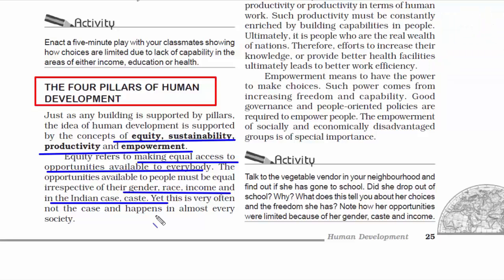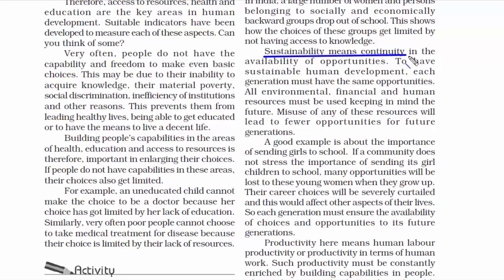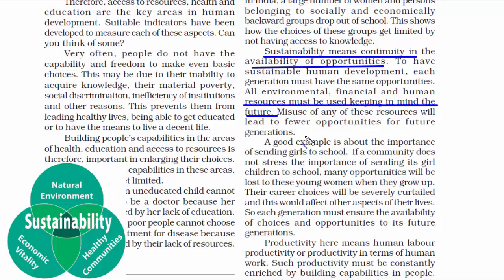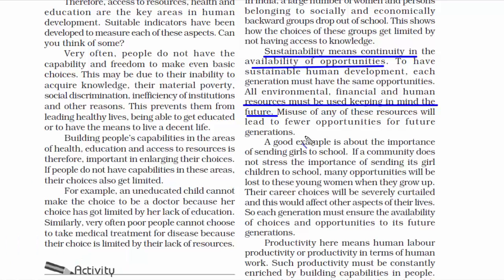The second pillar is sustainability, meaning continuity. For continuous human development, each generation must have the same opportunities. While sustainability is often used with regards to nature and environment, in human development it means ensuring opportunities are preserved. In many parts of India, communities do not stress the importance of sending girl children to school. As a result, many opportunities are lost for these women when they grow up, affecting their children, family, household culture, and behavior. Every generation must ensure the availability of choices and opportunities to its future generations.